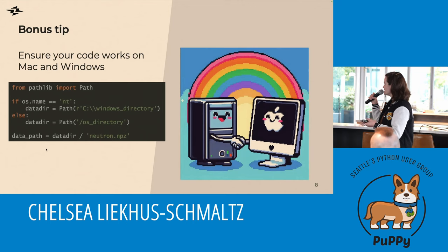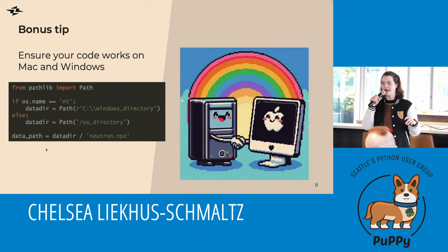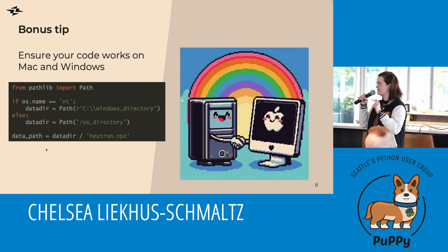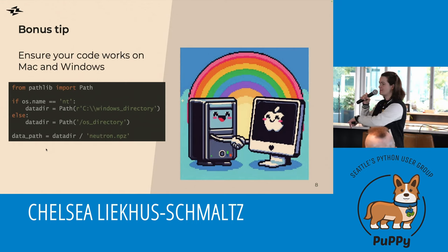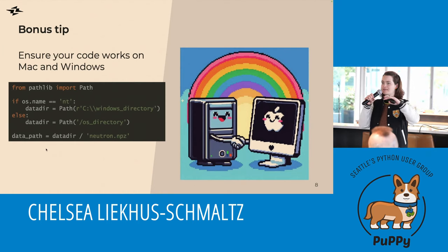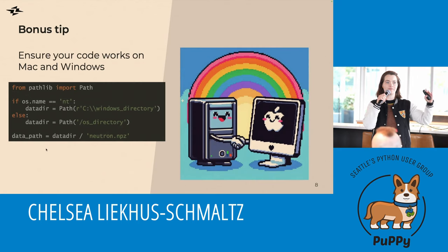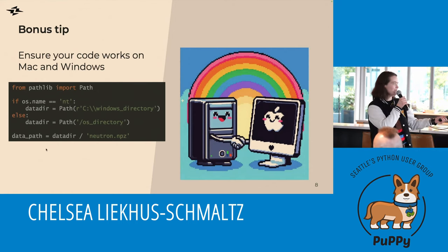My bonus tip is to ensure that your code works on Mac and Windows. Usually the main thing that's going to be different between Mac and Windows is the path where your data is stored. I like to use pathlib, which hides a lot of that. At the top of my code I set the path to where my data is depending on whether it's Mac or Windows, and from there on out I'm agnostic. And then you too can be as happy as these two holding hands under the rainbow.